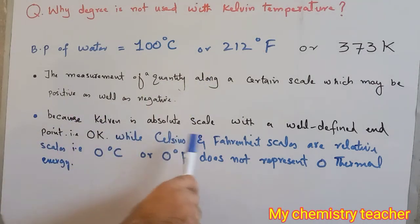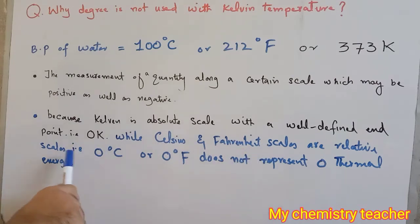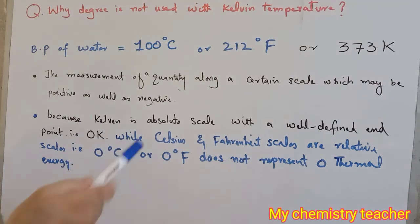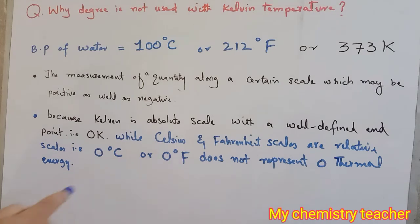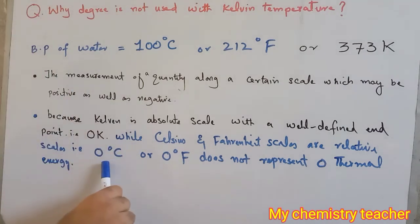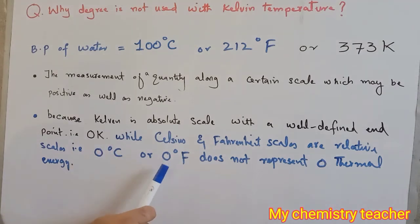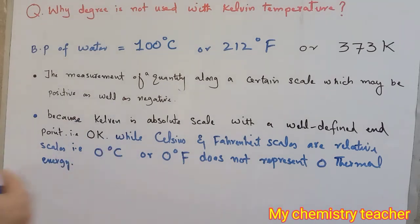But Celsius and Fahrenheit scales have 0 values which are not the end point — you can easily go beyond 0 degree Celsius and 0 degree Fahrenheit. Whenever you can go beyond 0, the end point is not defined, and whenever the end point is not defined, such quantities can be used with degree.